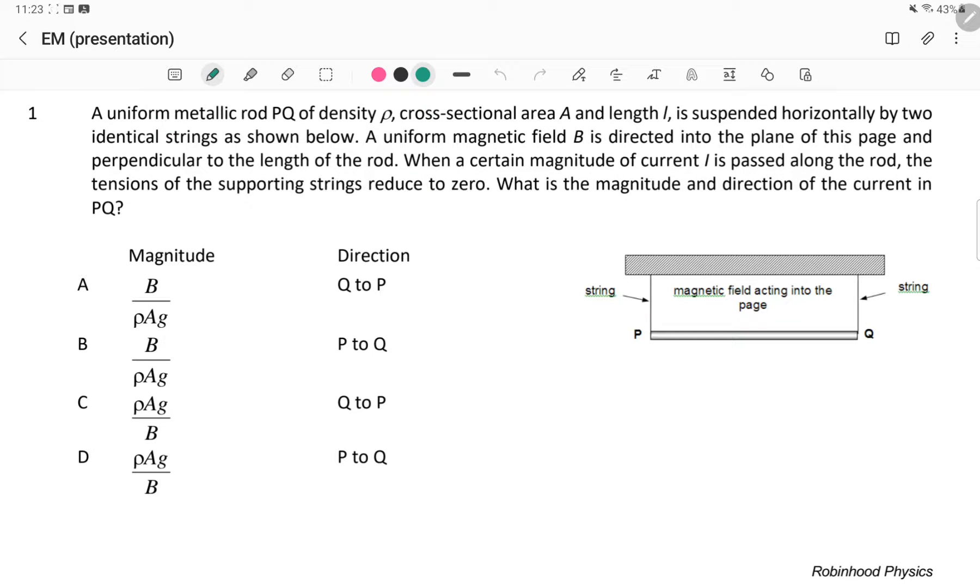In question 1, we have a uniform metal rod PQ of certain density, certain cross-sectional area and length L suspended by two strings.